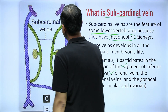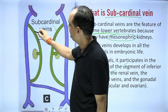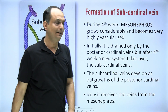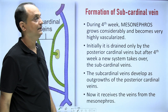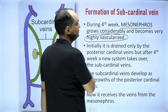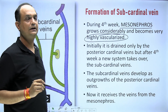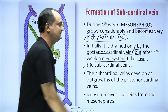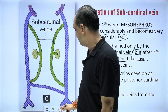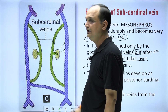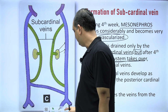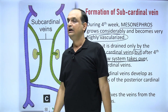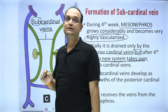In the diagram, the posterior cardinal vein and sub cardinal veins appear on both sides, draining the developing mesonephric kidneys. By the fourth week, the mesonephric kidneys enlarge and become highly vascularized. Initially these kidneys drain via the posterior cardinal vein, but after the fourth week the sub cardinal vein takes over this function, as the vascularity of the mesonephros increases beyond the posterior cardinal vein's capacity.